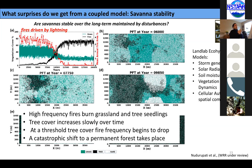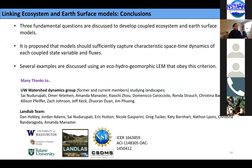That's another example of surprises in a coupled model. If we have a landscape evolution model running underneath it, the geomorphic outcomes will be very interesting to see. In summary, we discussed three fundamental questions, proposed that models should sufficiently capture characteristic space and time dynamics of each coupled state variable and fluxes, and presented several examples. With that, I'd like to thank the watershed dynamics group and the Landlab team.